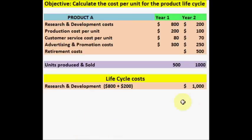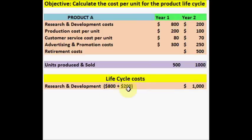The first step is to calculate the research and development costs. What we are going to do is take the year 1 cost of 800 plus 200 of the year 2 cost to get a total research and development cost of 1000 dollars.